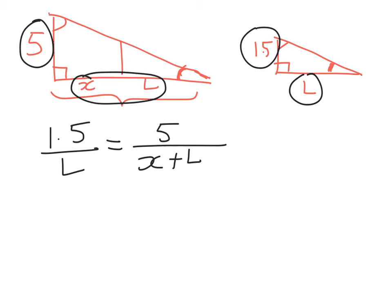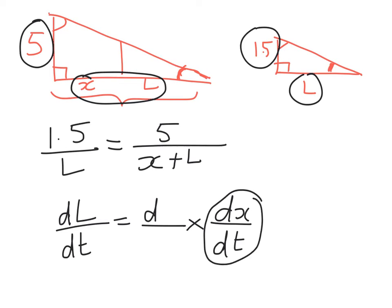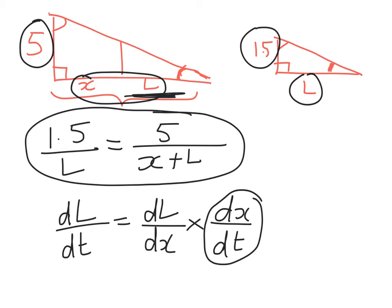We've got 1.5 over L is equal to 5 over x plus L. Now that means I can get a link between x and L which could come in handy because my chain rule relationship is going to be this. I'm going to put the second derivative in here first. We know dx by dt. This is how quickly the boy is walking away. And so now, to figure out the rate of change of the shadow L, I want dl by dx.